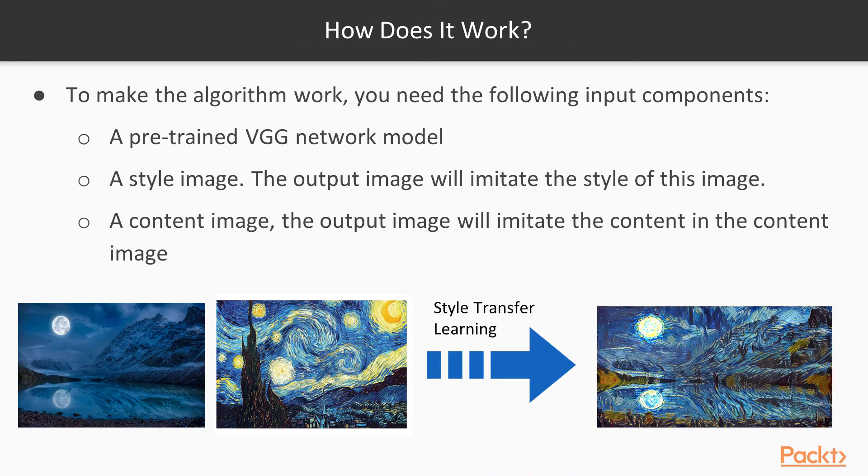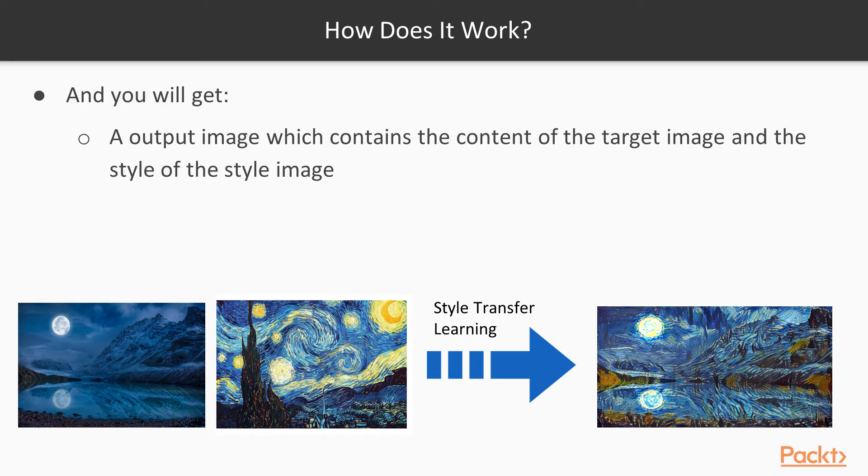So what do you need to make it work? You need a VGG network first, so an ImageNet VGG network. You need a style image of course and you need a content image and you need of course the algorithm of style transfer.